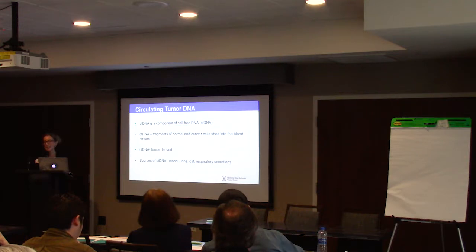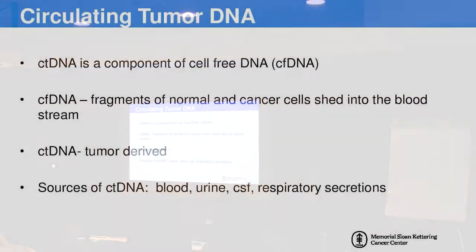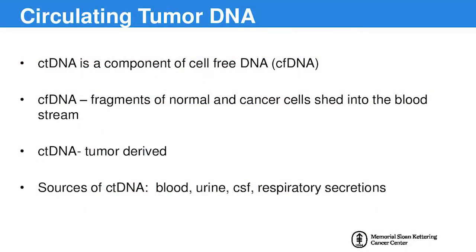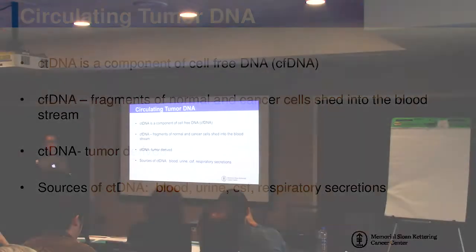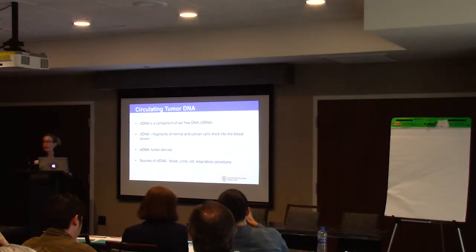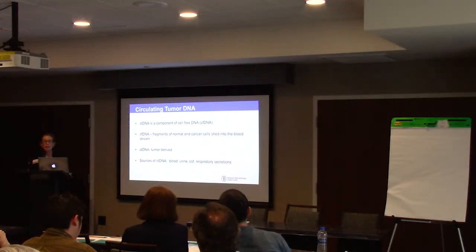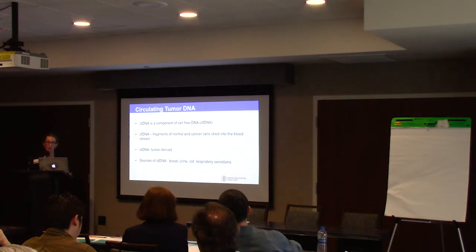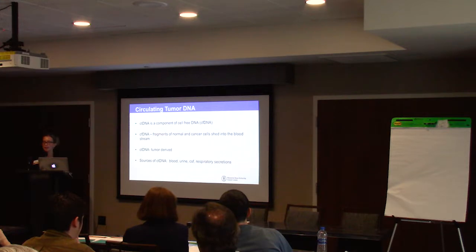ctDNA is a component of cell-free DNA. Cell-free DNA represents fragments of normal and cancer cells shed into the bloodstream. ctDNA ultimately reflects tumor-derived DNA, and the sources of ctDNA include blood, urine, CSF, and respiratory secretions.